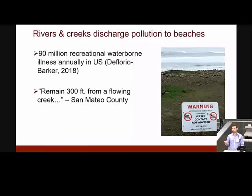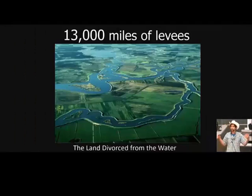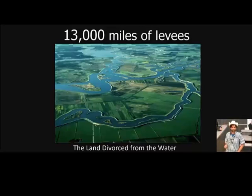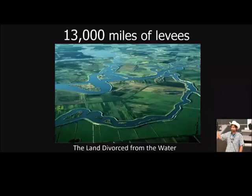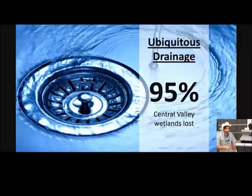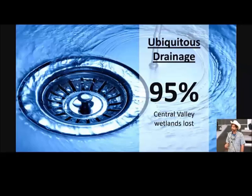Rivers and creeks, especially in urban areas where water used to spread and slow, now whether it's on the roof of this building, the impermeable street outside, any orchard, farm field, or the parking lot at Safeway — all of it is engineered to drain as rapidly as possible.